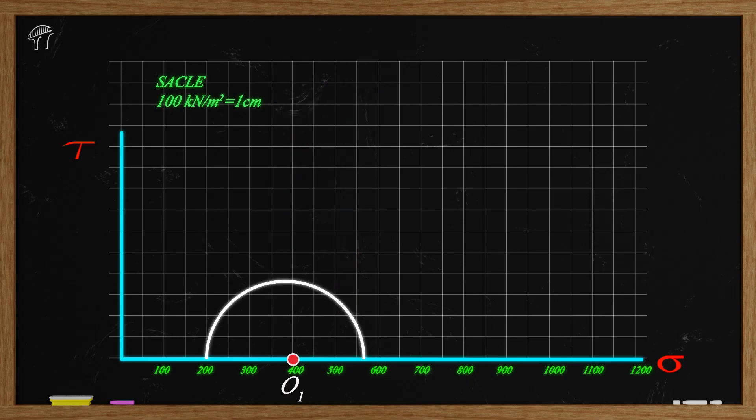For the second circle, measure the distance equals to 6 cm then keep the tip of the compass at center O2 and draw the circle like this. Similarly, we can draw the third circle with the center at O3 and radius 8 cm.